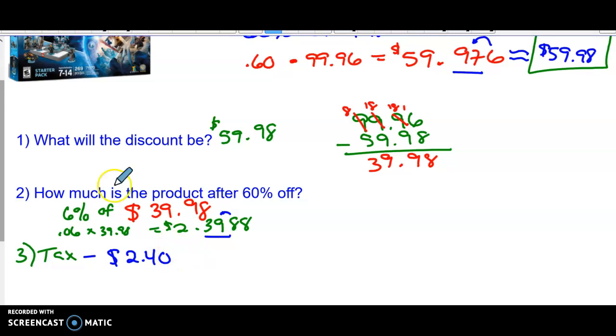So if you're going to do this right, how much would you totally pay? What do you got to do with the 240 and the 39.98? You're going to add them. So $39.98 plus $2.40. You're going to pay a total of $42.38.